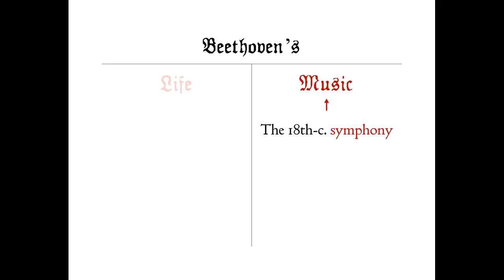In Beethoven's time, a symphony was laid out according to a four-movement template — the same three movement types you learned for the sonata template, including the Sonata Allegro template for a sonata's first movement — plus a new inner movement, usually the third movement but sometimes the second, called the menuetto or scherzo. In either case, the movement incorporates a contrasting section called the trio.